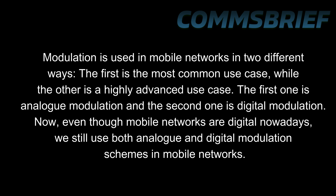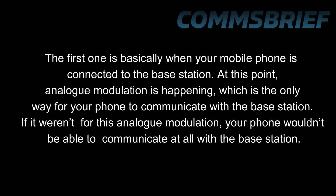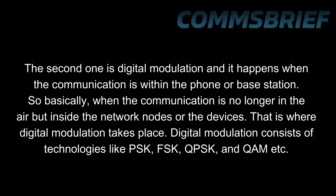Even though mobile networks are digital nowadays, we still use both analog and digital modulation schemes. The first is basically when your mobile phone is connected to the base station — analog modulation is happening, which is the only way for your phone to communicate with the base station. The second is digital modulation, which happens when the communication is within the phone or base station — inside the network nodes or devices.